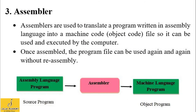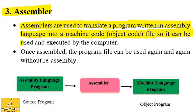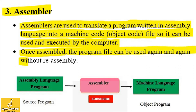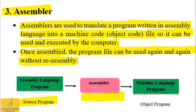Now let's see the third language translator: the assembler. Assemblers are used to translate a program written in assembly language into machine code or object code, so that it can be used and executed by the computer. Once a program is assembled, the program file can be used again and again without reassembling. In the diagram, the source program — which is an assembly language program — is provided to the assembler as input, and the assembler generates its output as a machine language program, also known as the object program or object code.